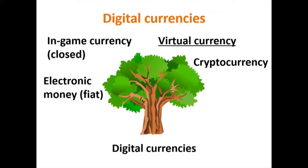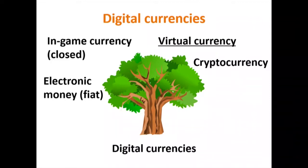Here is a diagram of digital currencies — like a tree with at least four branches. Electronic money is fiat — like PayPal or current bank accounts — euros or dollars in digital form. Then there are in-game currencies, which are closed: they are not fully convertible. You can earn in-game currency while playing or buy it with fiat, but you cannot sell it back for fiat.